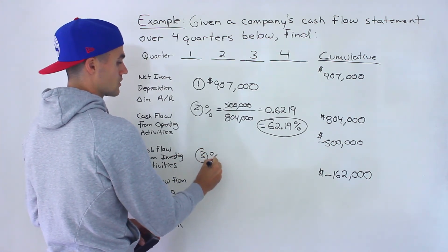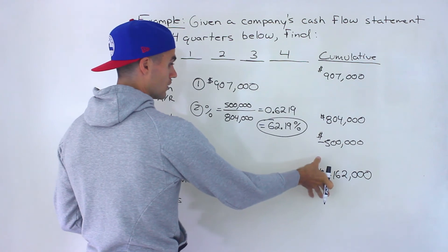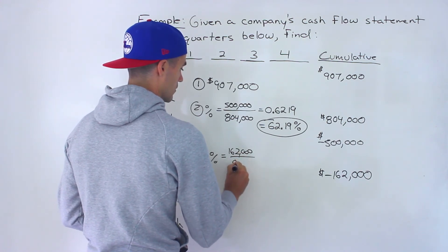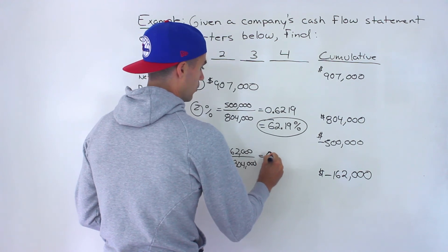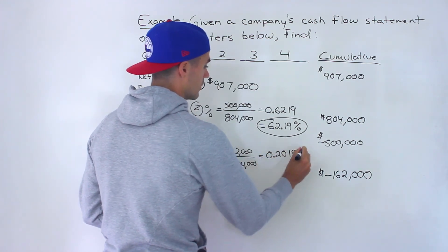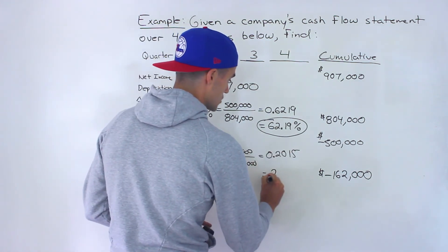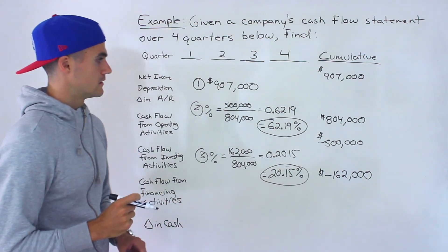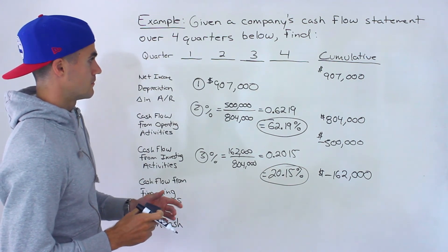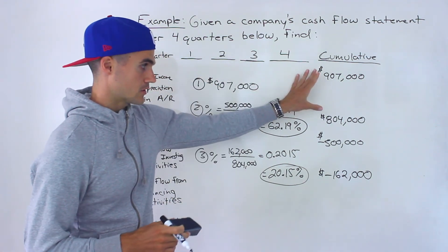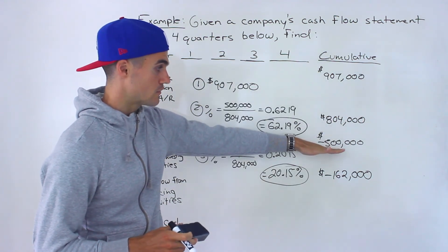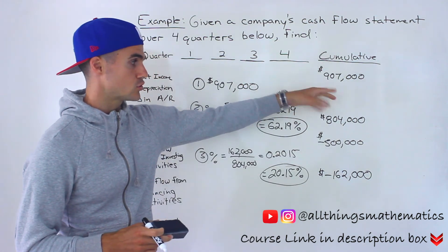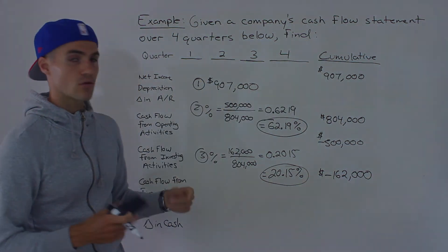Number three: what percentage of the operating cash flow was used for financing? Notice that's a negative value as well, so we just put a positive here. We'd end up with 0.2015, which converting to a percentage is 20.15%. Not too bad of a question. For number one we're just adding — the earnings, the operating cash flow, the cash flow from investing activities, the cash flow from financing activities — and then once you have those cumulative amounts, you can go and answer the three questions.